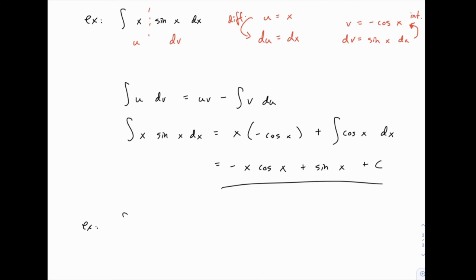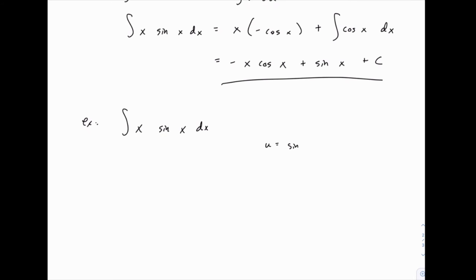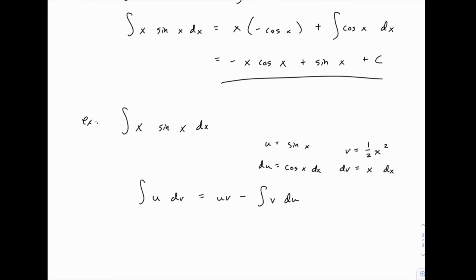So let's try the same example where we select u to be sine of x and dv to be x dx. Remember the dx always goes with dv no matter what. From there we can find du pretty easily. That's cosine of x dx. So far so good. And then for v we want to integrate x which would give us one half x squared. Notice I'm leaving off the plus c here. The idea is that plus c could be anything so we make it simple by making it zero. So I'm not going to do something like one half x squared plus c because it's unnecessary. If we try this with the formula, integral of u times dv equals uv minus the integral of v times du.